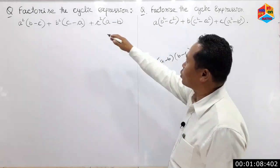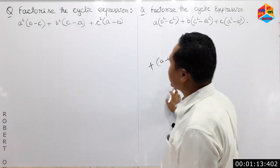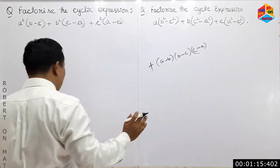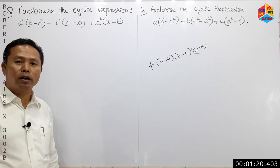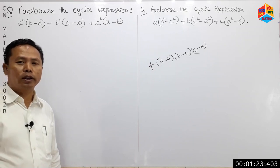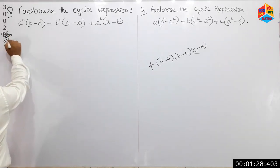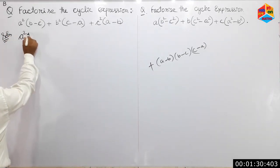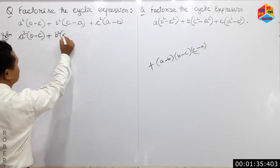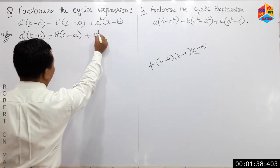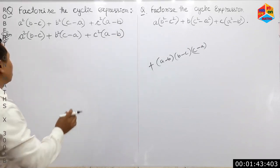How to factorize a cyclic expression — when you factorize the equation you need to be certain. So the question here is: a-squared (b minus c) plus b-squared (c minus a) plus c-squared (a minus b).